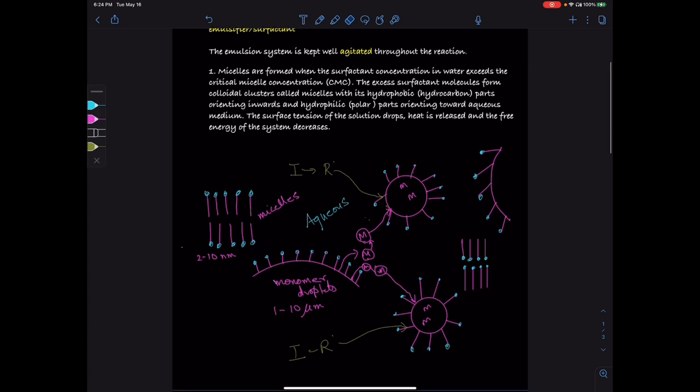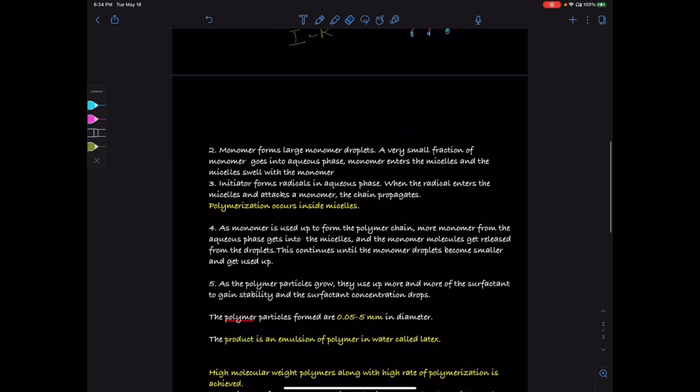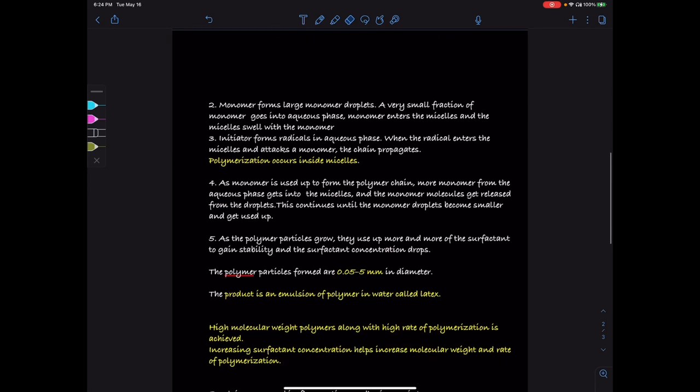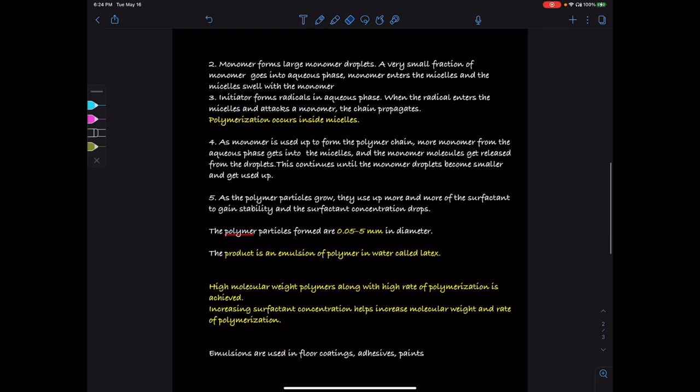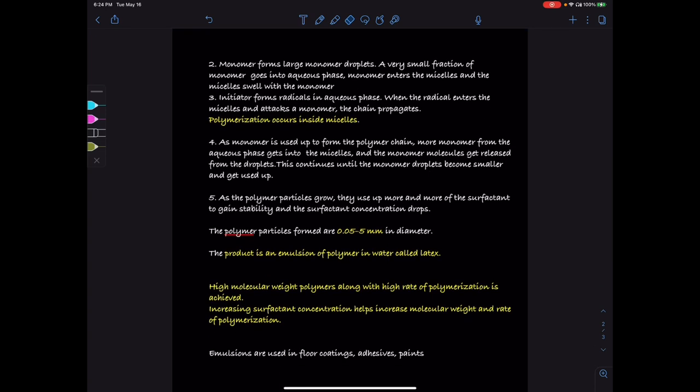Thus, in emulsion polymerization, the polymerization occurs inside the micelles. The polymer particles that are formed are of the order of 0.05 to 5 millimeters, and the product is an emulsion of polymer in water, also called latex.